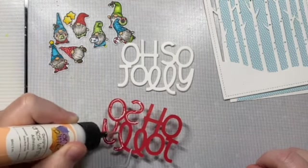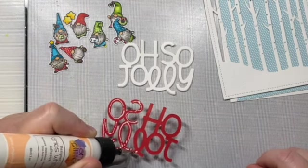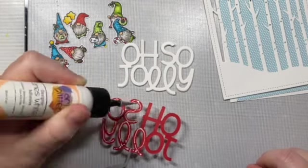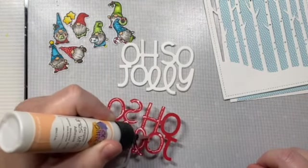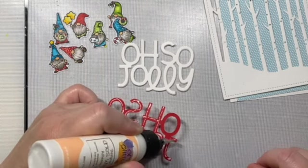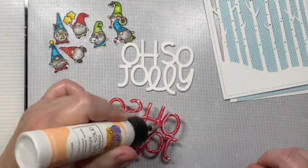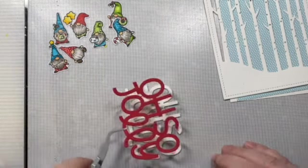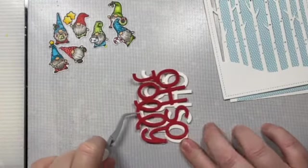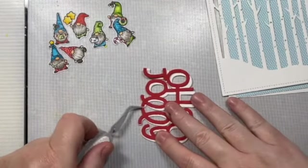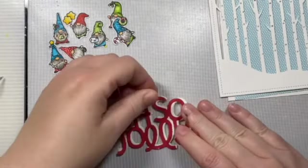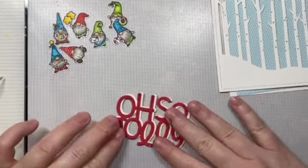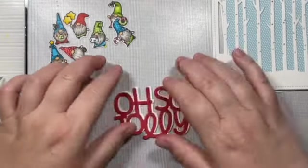And then we're going to place it on top of our white sentiment and we're going to stack it to the side. And I'm going to show you how I do that. I'm going to take my reverse tweezers and just kind of arrange the whole thing. So it's a little bit off to one side and then I'll just press that down when I get a good placement. And that looks perfect to me.